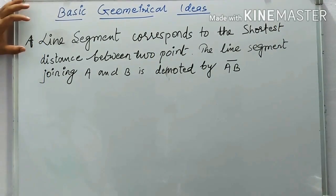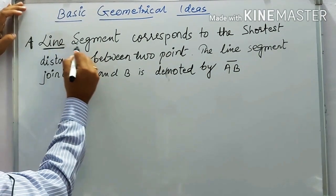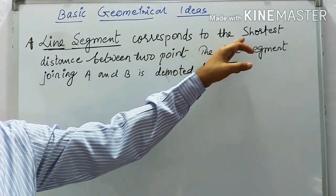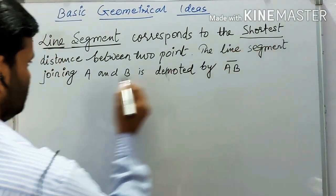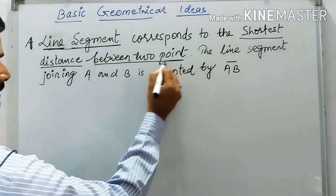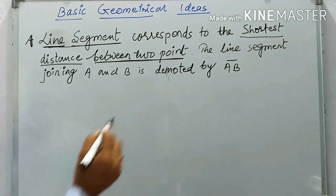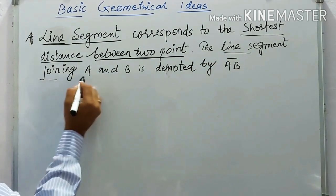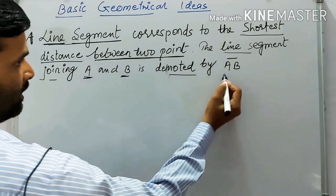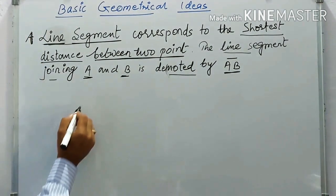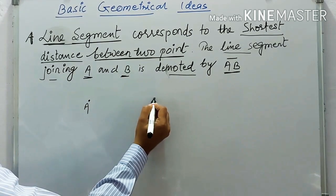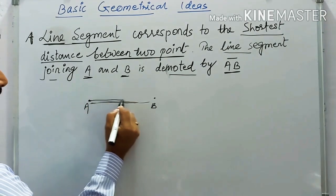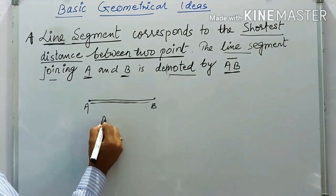The second topic is a line segment. A line segment corresponds to the shortest distance between two points. A line segment joining point A and point B is written as AB. Suppose point A and point B are given — joining them gives a straight line segment AB.